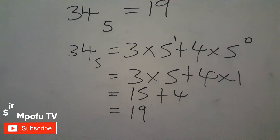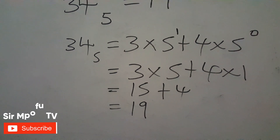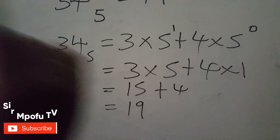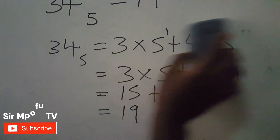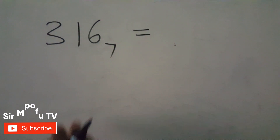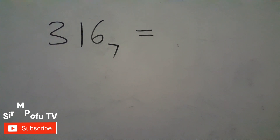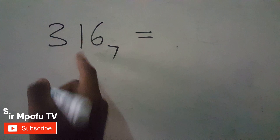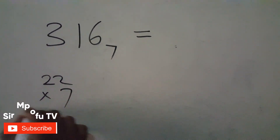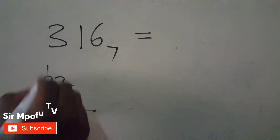I'm going to give you a few examples. I'll use the shortest method first then prove with the longest method. Let's take another example: 316 base 7. We're going to say seven times three is 21, then 21 plus one is 22.